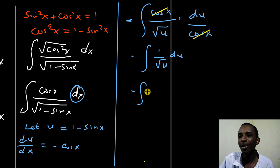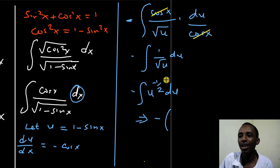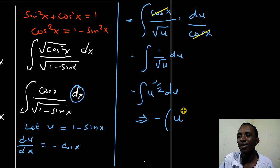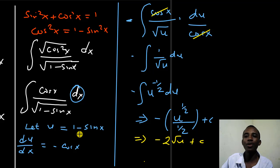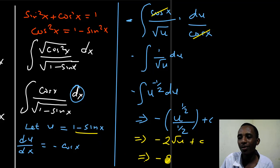This is negative the integral of u to the power of negative one half du, which gives us negative 2 times the square root of u plus C. Substituting back, since u equals 1 minus sine x, we get negative 2 times the square root of 1 minus sine x plus a constant. That is our final solution to the integral.